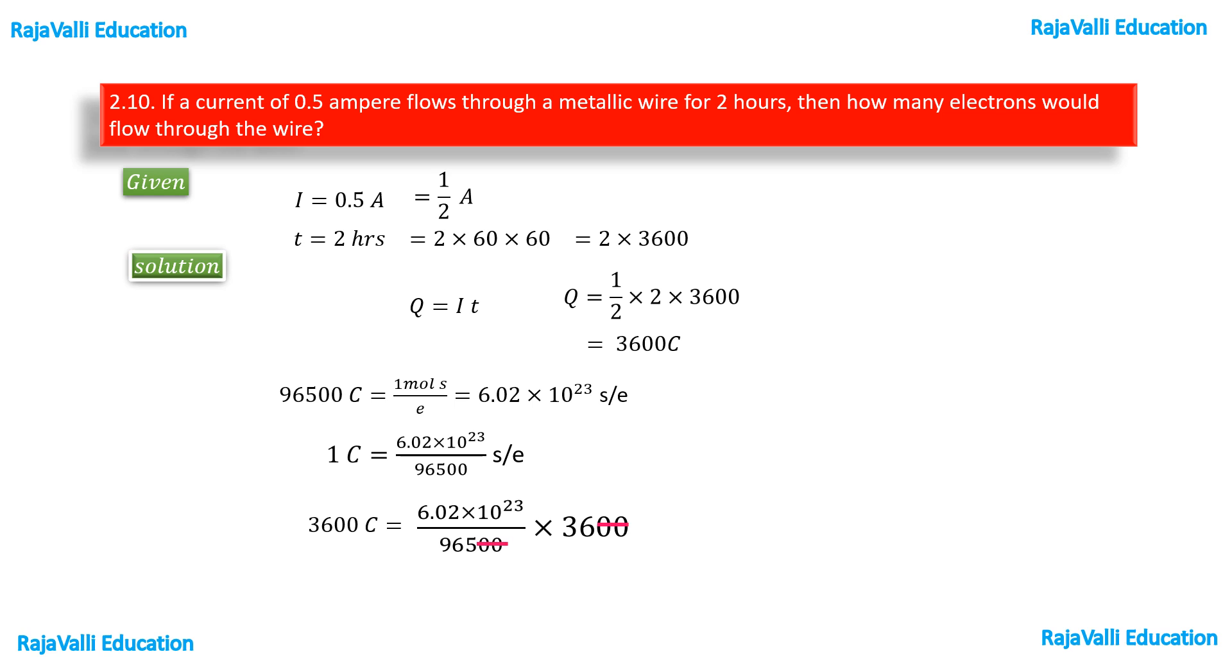So multiplying this value by 3600 you will get the answer. Here I am canceling 36 by 965, approximate values. So approximately it gives 1 by 26.